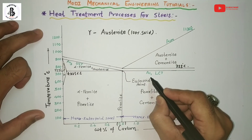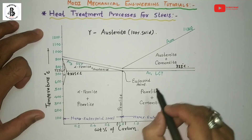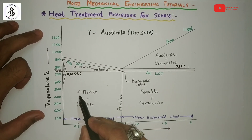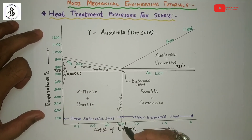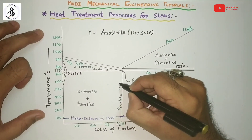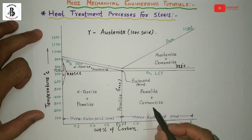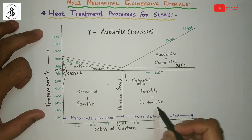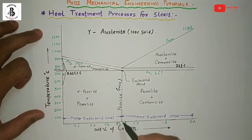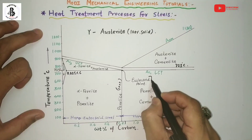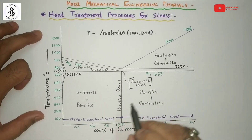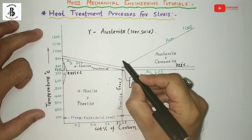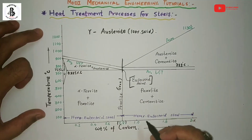One more temperature line is there at around 723°C — that will be the lower critical temperature line. All these phases before 0.8% carbon will be the formation of alpha ferrite plus pearlite. At 0.8% carbon, it will be the 100% pearlitic structure. After that, up to 2% carbon it will be the formation of pearlite plus cementite. This point at 0.8% carbon and 723°C is known as the eutectoid point, and the transformation passing through this line gives the eutectoid steel formation.